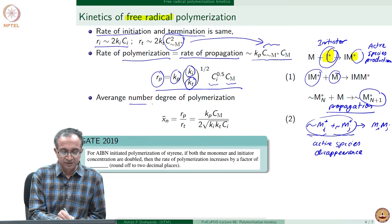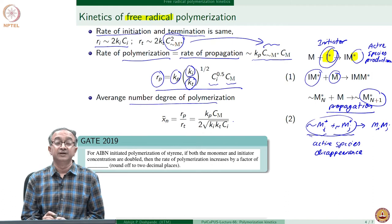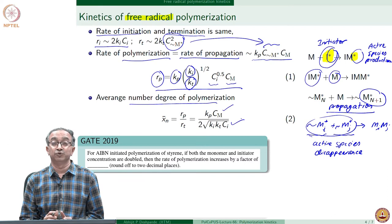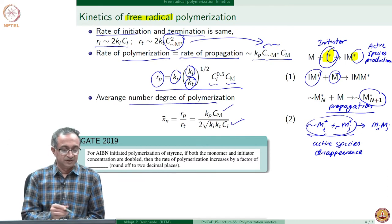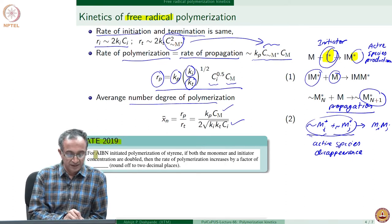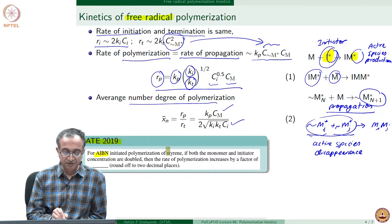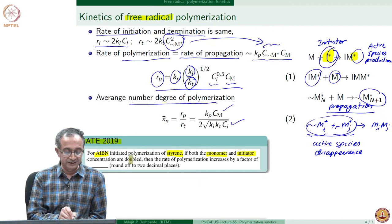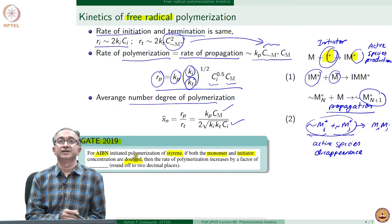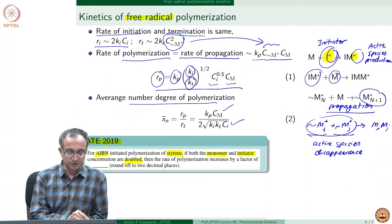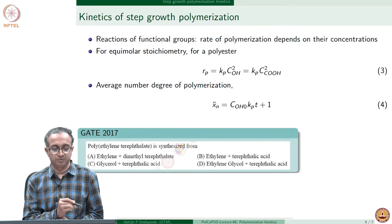Based on this we can also calculate the average number degree of polymerization, and that again depends on the concentration of monomer and initiator and the rate constants. You can see direct application of this in this exam question where an AIBN-initiated polymerization of styrene, which happens through this mechanism, asks: if both monomer and initiator are doubled, then what happens to the rate of polymerization? Looking at the information on the slide, you should be quickly able to solve this problem.